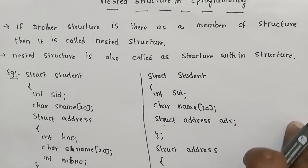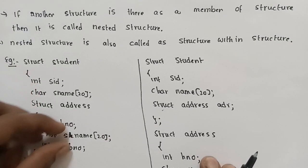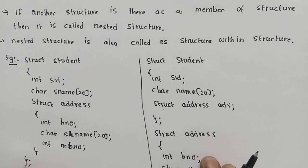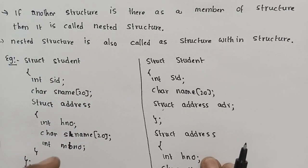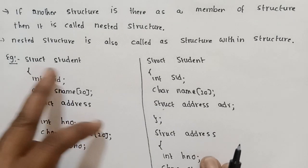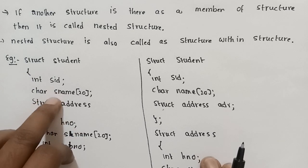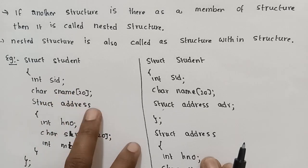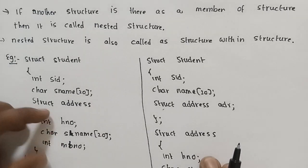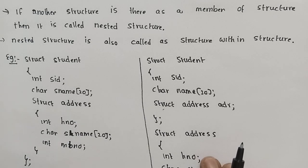Once we define a nested structure, there are ways to differ between structures. First way: I will define the address structure inside the outer student structure. The outer structure is named 'student', with members such as char student name, and student address. The address structure has members: student house number, mobile number, and student street name as character type.